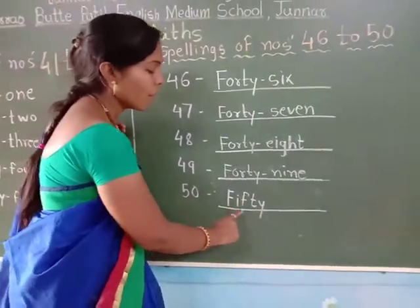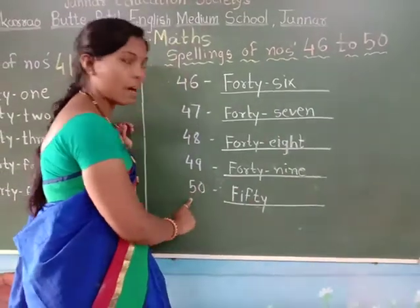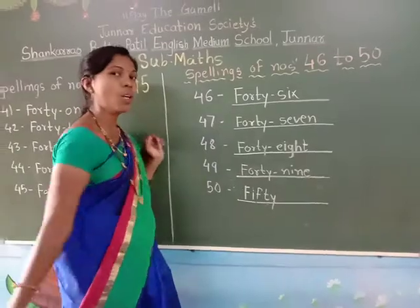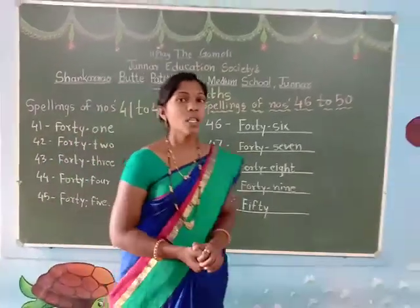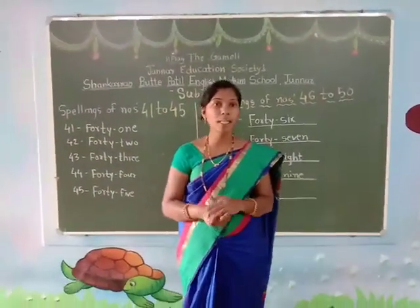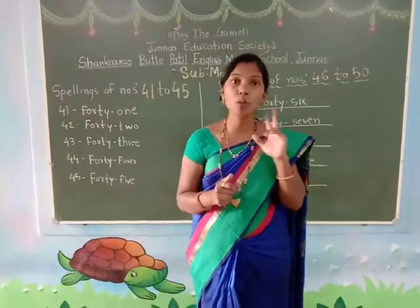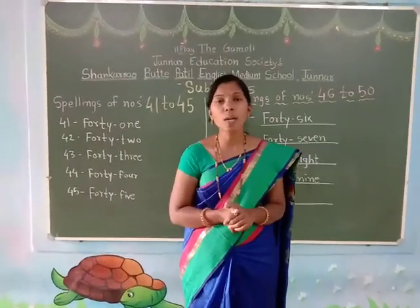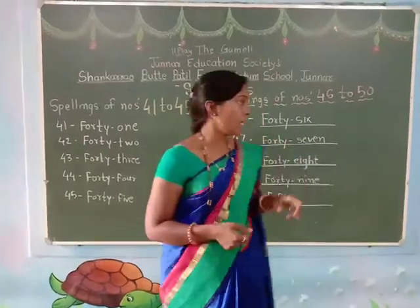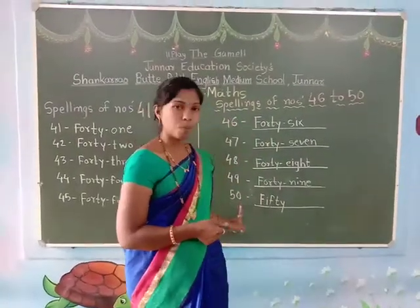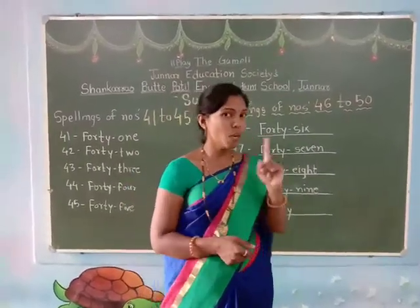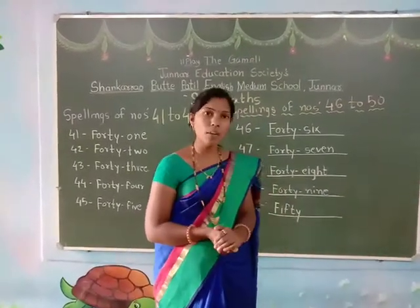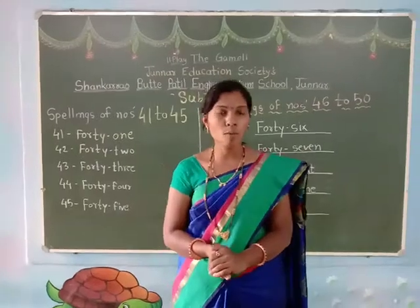And F-I-F-T-Y, 50. So kids, you have to do practice of writing all these spellings — 1 up to number 50. In today's homework, you have to do practice of writing spellings 46 up to 50 one time, and 1 up to number 50 one time. Okay? So send me photos of your homework. Bye-bye, kids.